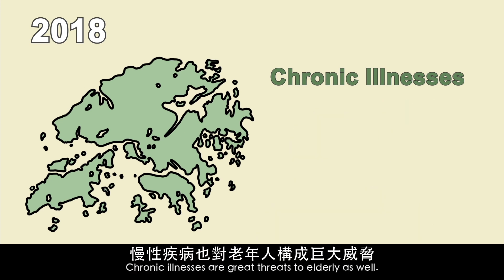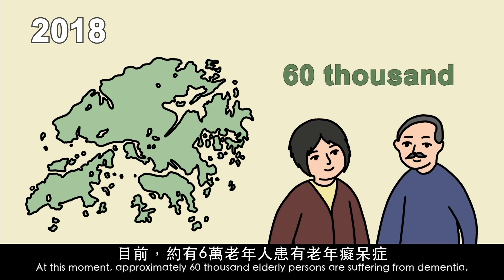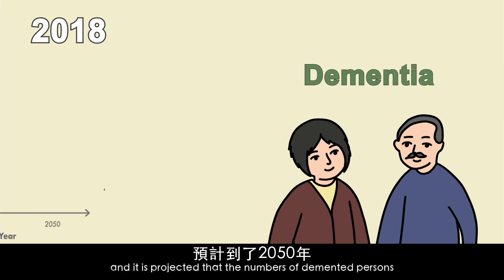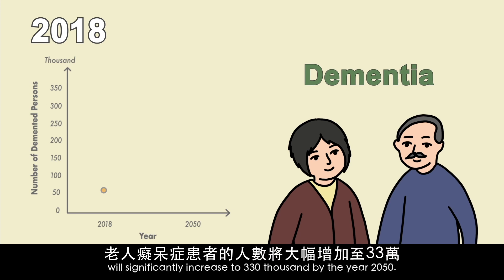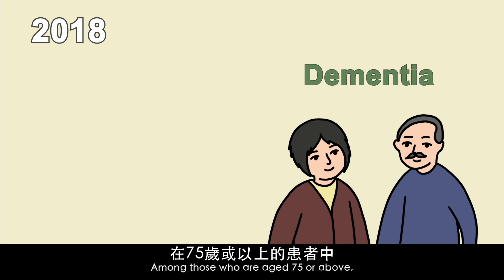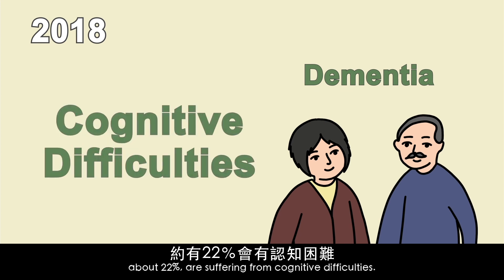Chronic illnesses are great threats to the elderly as well. At this moment, approximately 60,000 elderly persons are suffering from dementia, and it is projected that the number of persons with dementia will significantly increase to 330,000 by the year 2050. Among those who are aged 75 or above, about 22% are suffering from cognitive difficulties.